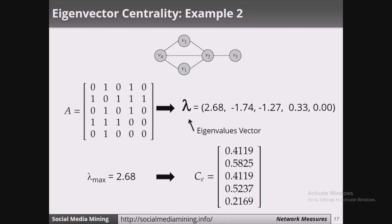Let us look at another example. The lambda values here are 2.68, minus 1.74, minus 1.27, 0.33, and 0.00. We choose the highest eigenvalue, which is 2.68. With this largest lambda value we get the centralities as shown. This is another example of eigenvector centrality.